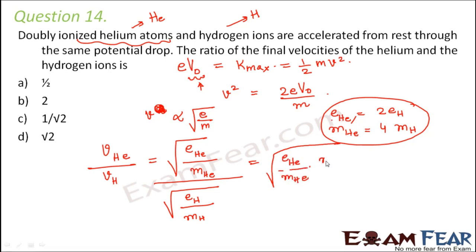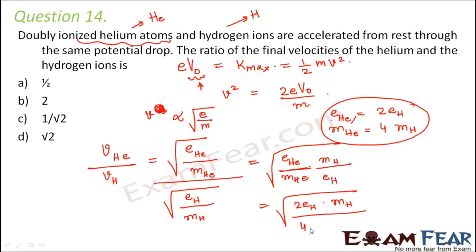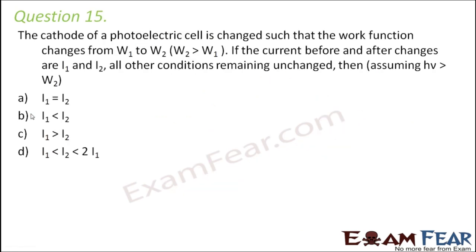So the ratio of the velocity of helium to the velocity of hydrogen equals the square root of (charge of helium / mass of helium) divided by (charge of hydrogen / mass of hydrogen). Substituting: charge of helium is 2×e_H and mass of helium is 4×m_H, so m_H and e_H cancel, leaving the square root of 2 by 4, which is the square root of 1 by 2, giving the final ratio as 1 divided by √2. That is option C.